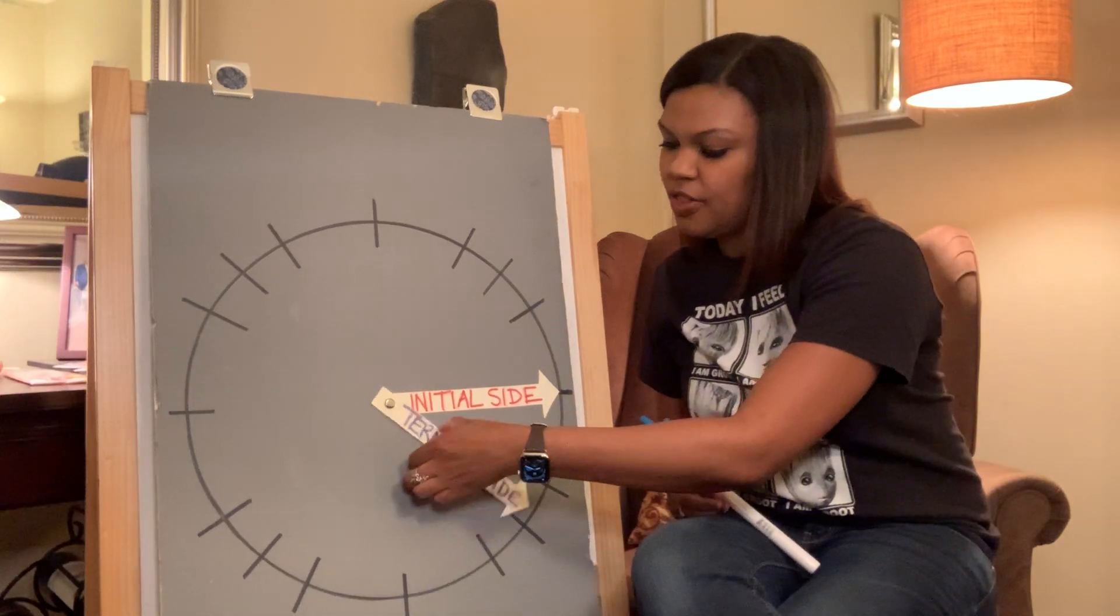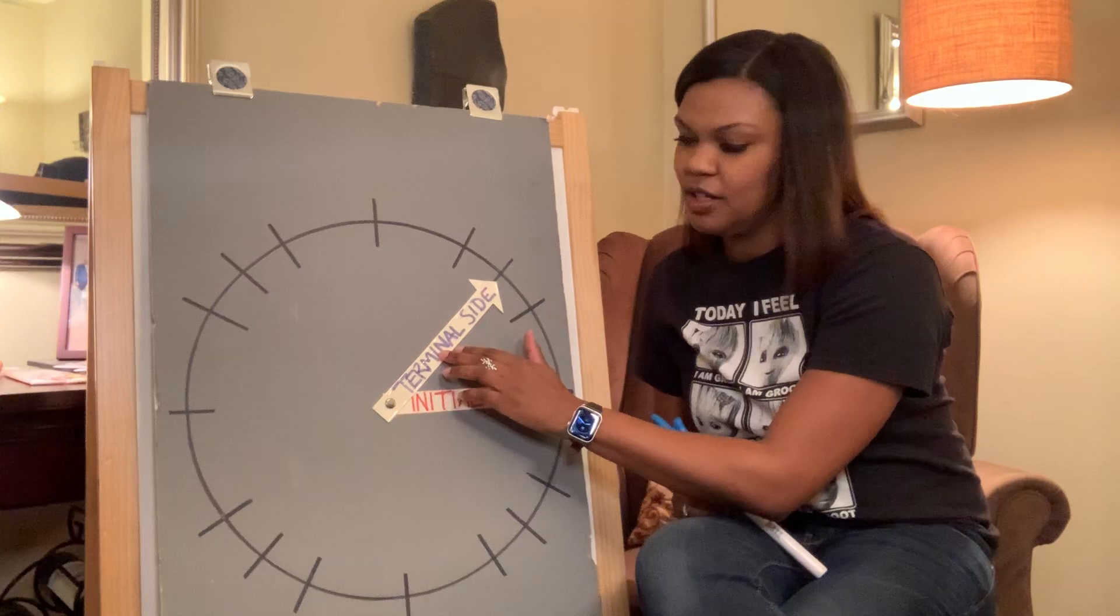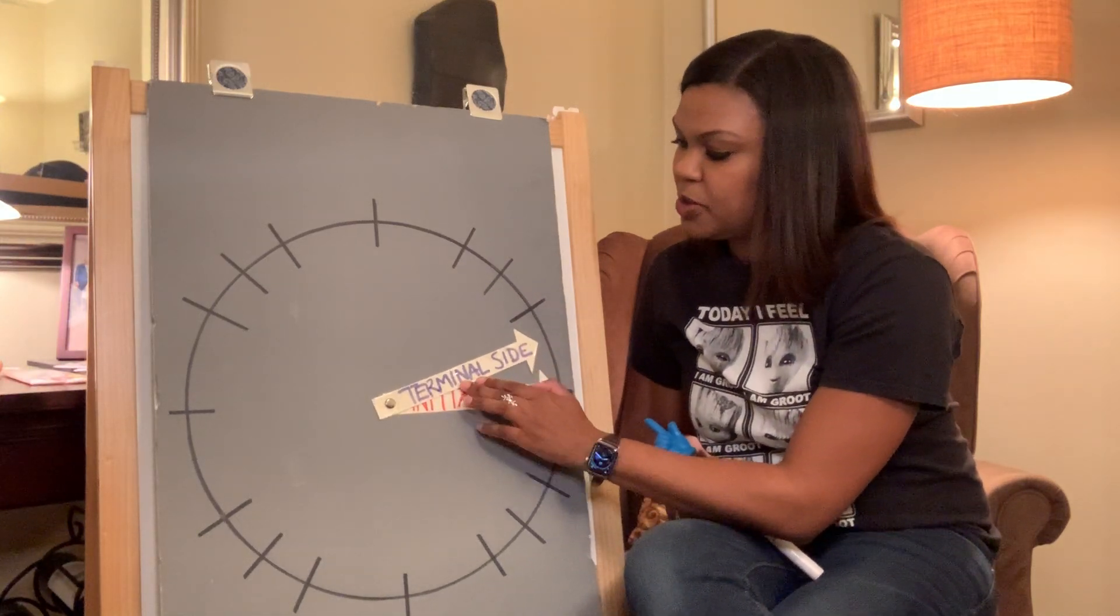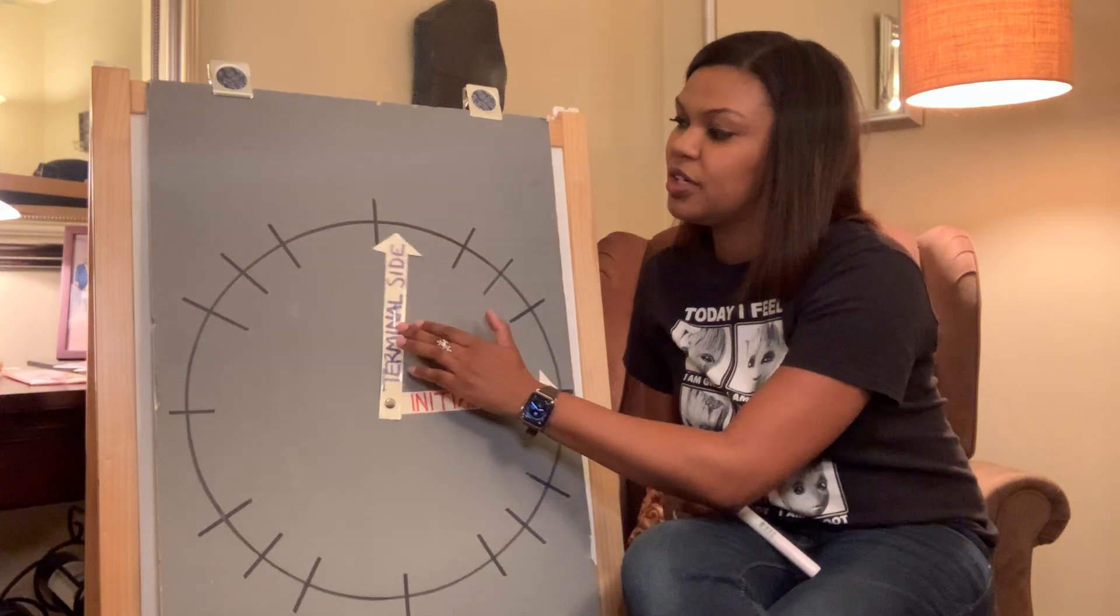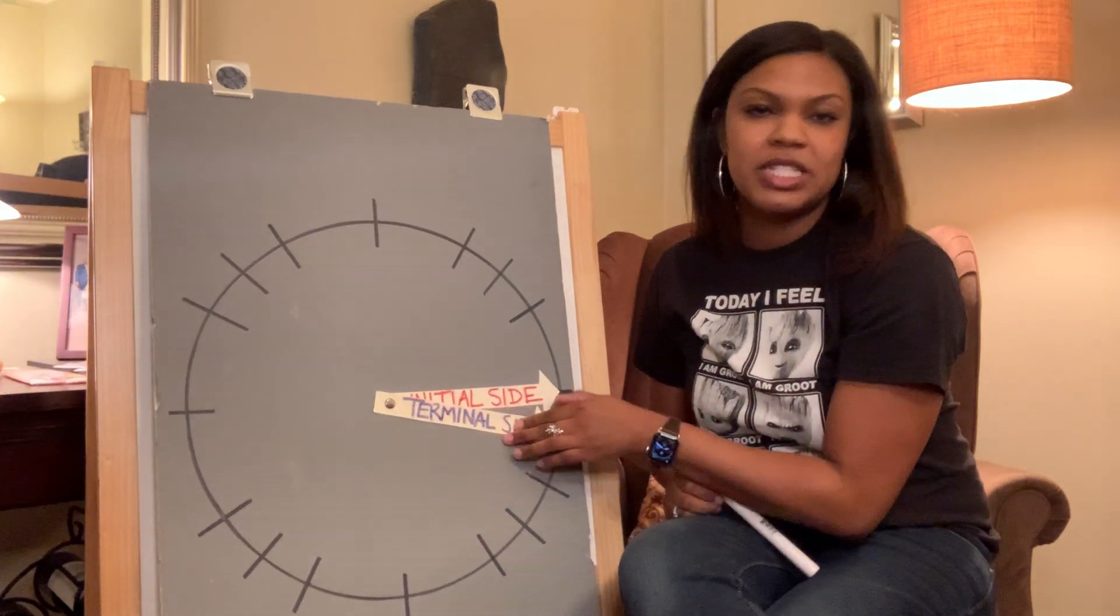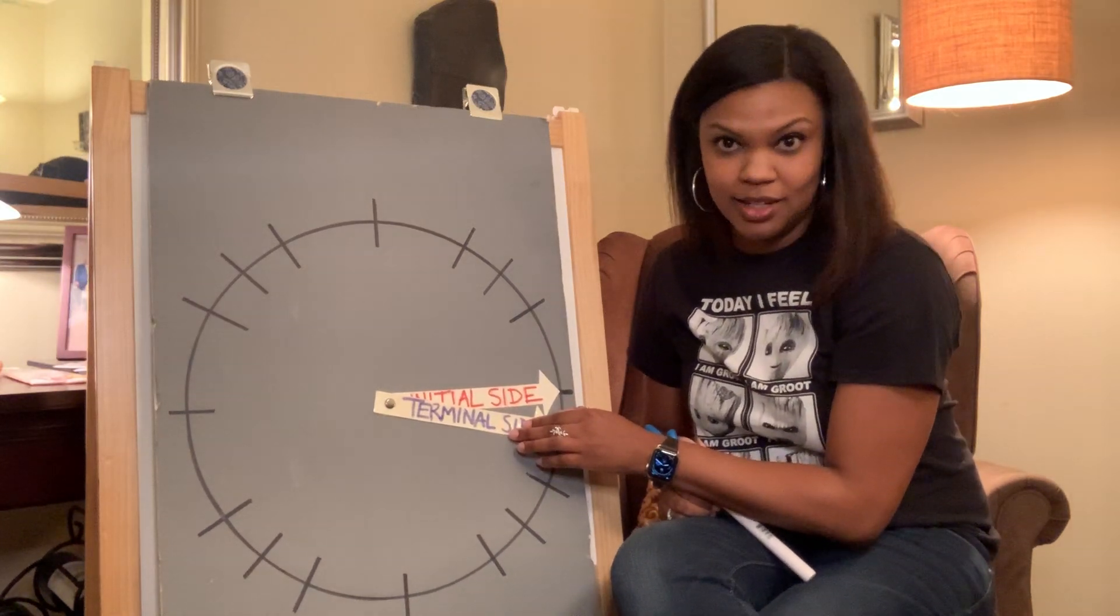However, the other portion of our angle is called the terminal side, and the terminal side is the one that moves. Notice how the terminal side rotates in a counterclockwise manner. When it rotates counterclockwise, that is known as a positive angle.